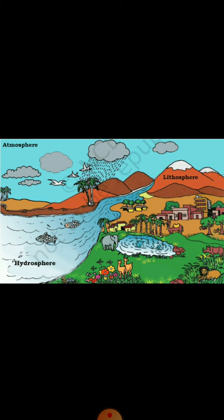Atmosphere. The atmosphere is a layer of air surrounding the earth, held in place by the earth's gravitational force. It is made up of nitrogen, oxygen, carbon dioxide and other gases. The atmosphere provides us with life-supporting gases and protects us from the harmful rays of the sun. Changes in weather and climate also take place due to changes in the atmosphere.